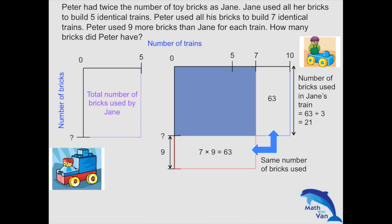So with that, we have solved our whole question. Because Peter could build 10 of Jane's trains. So 10 times 21, 210. That's it.